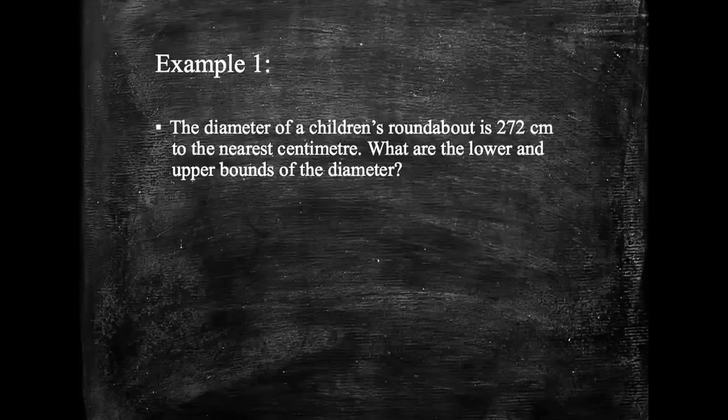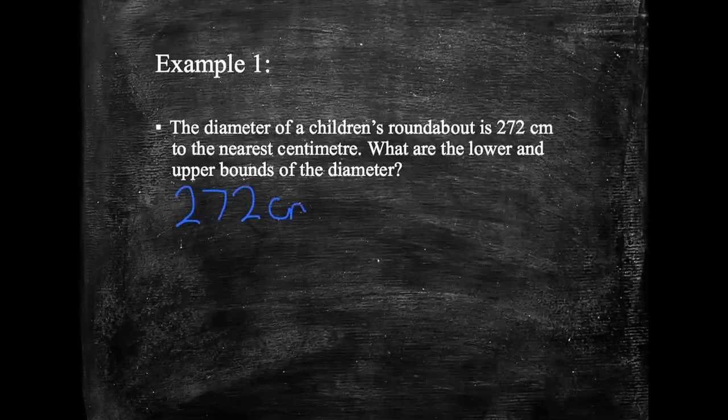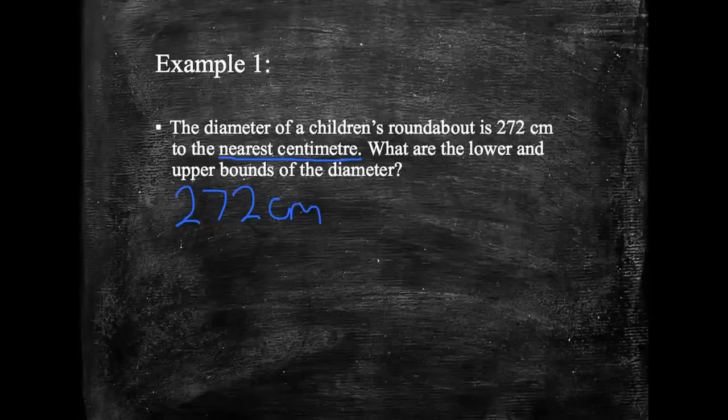Okay, this is quite a straightforward question if we know what it is that we're being asked to do. Well, let's have a look. We've got 272 cm, but it says it's been rounded to the nearest cm. Now with any question like this, what it's been rounded to is the key.